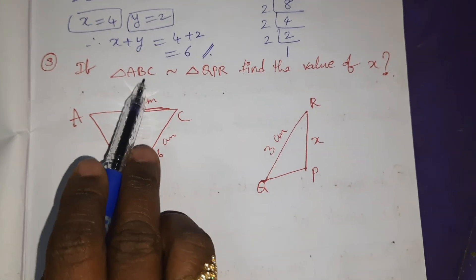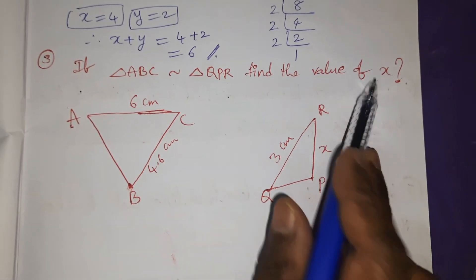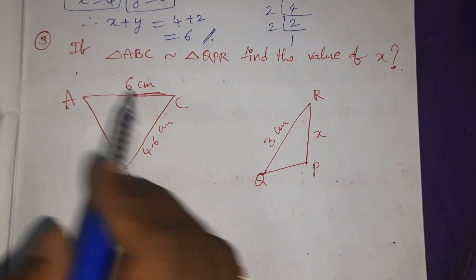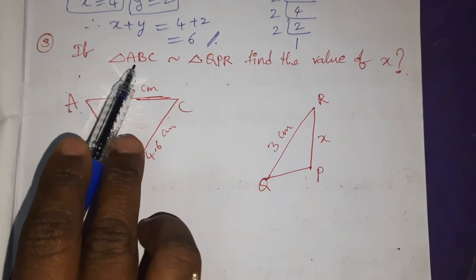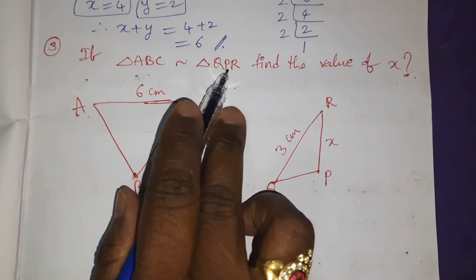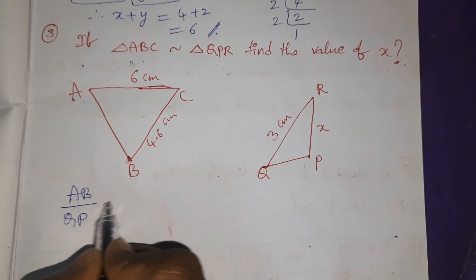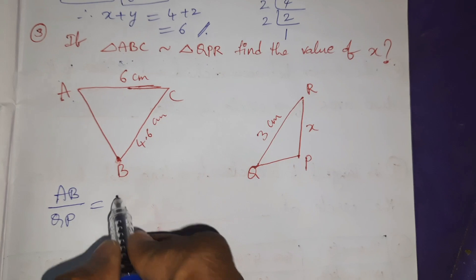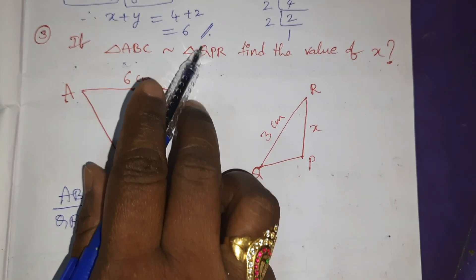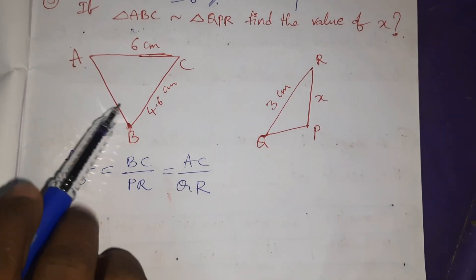If triangle ABC is congruent to triangle QPR, find the value of x in the figure. ABC congruent to triangle QPR means corresponding sides are proportional. So AB/QP = BC/PR = AC/QR.